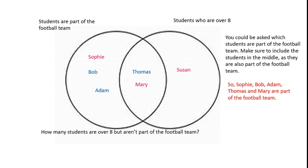If you're given this Venn diagram, you could be asked which students are part of the football team. You have to make sure to include the students whose names appear in the middle of the Venn diagram, as they are also part of the football team. So the answer would be: Sophie, Bob, Adam, Thomas and Mary are part of the football team.